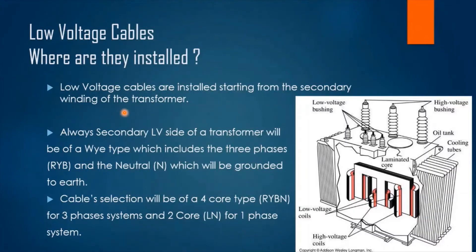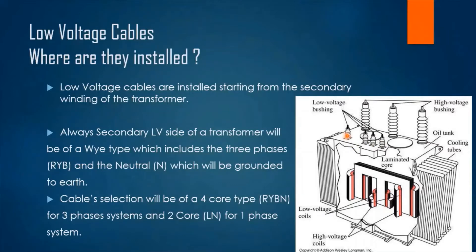Where are low voltage cables installed? Looking at this transformer picture, there is a primary side that carries the medium or high voltage cables, and a secondary terminal side which carries the low voltage side. These terminals are four terminals indicating three lines — L1, L2, L3 — and the neutral, which is also grounded to earth. According to this, we can use a four-core cable indicating three lines and a neutral for a three-phase system.